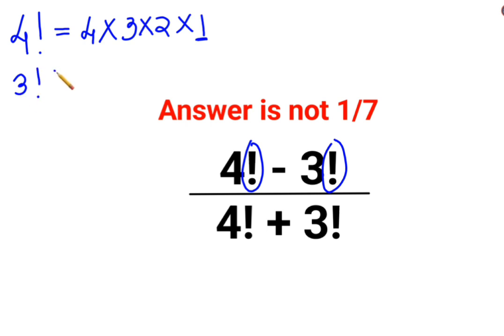Similarly for 3 factorial, you can say it is 3 multiplied by 2 multiplied by 1. Now if you look closely, this gets common. So I can write 4 factorial as 4 multiplied by 3 factorial.